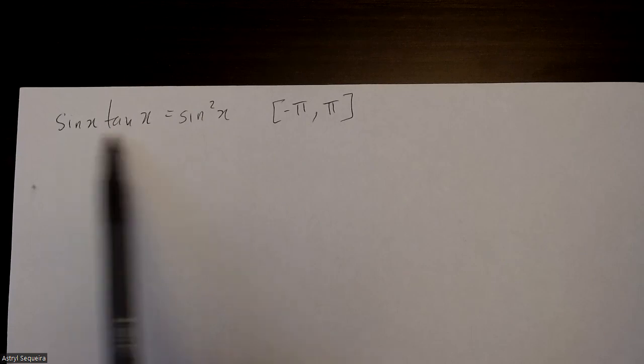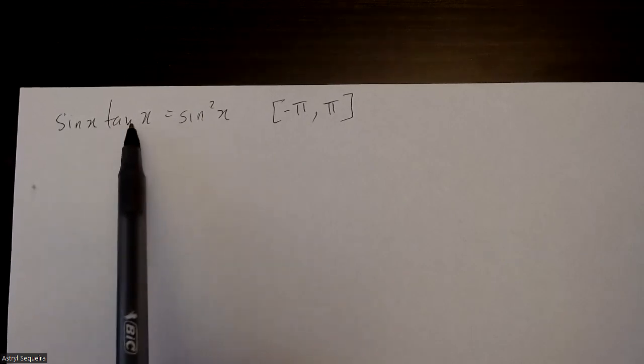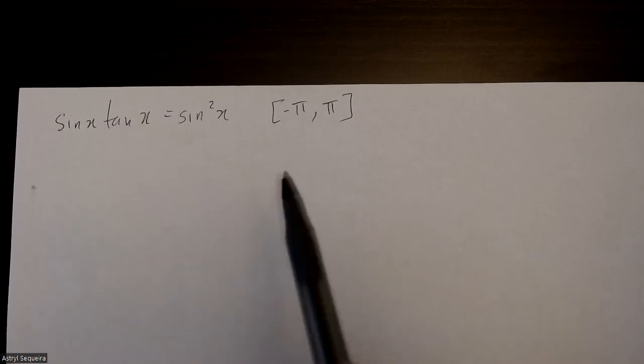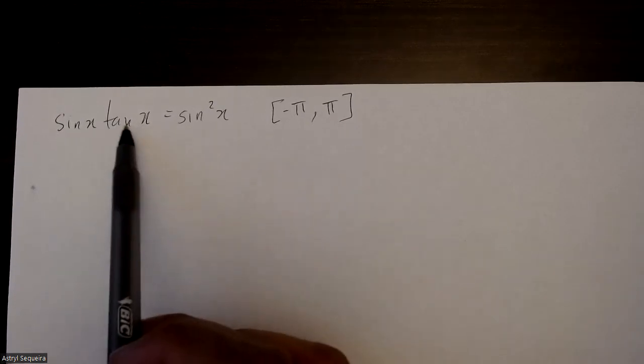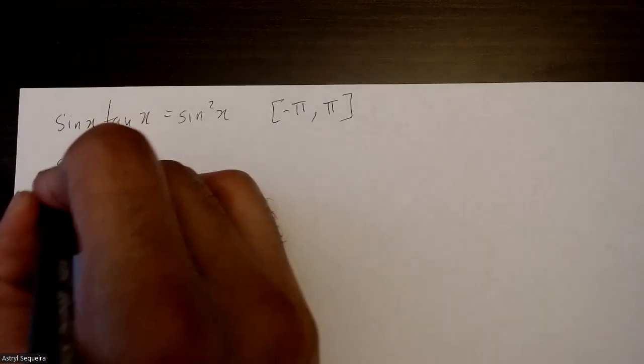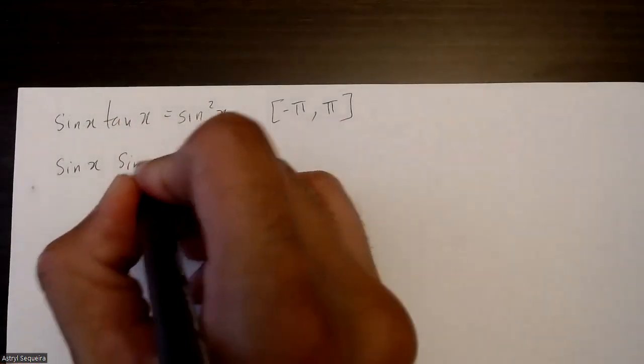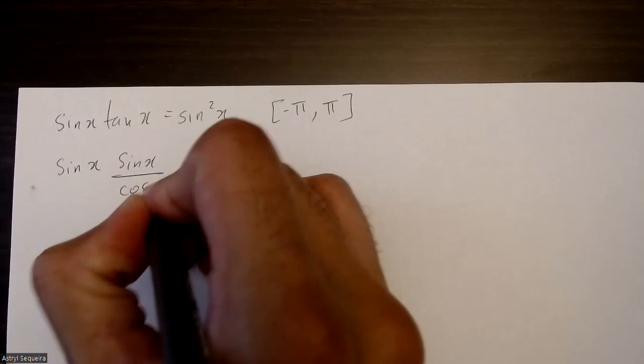So if I bring this to this side, it will be impossible to factor it completely because I'll still have sines and tans in the same equation. So the first thing I actually want to do is get rid of this tan. I want to convert this tan into sine over cos.